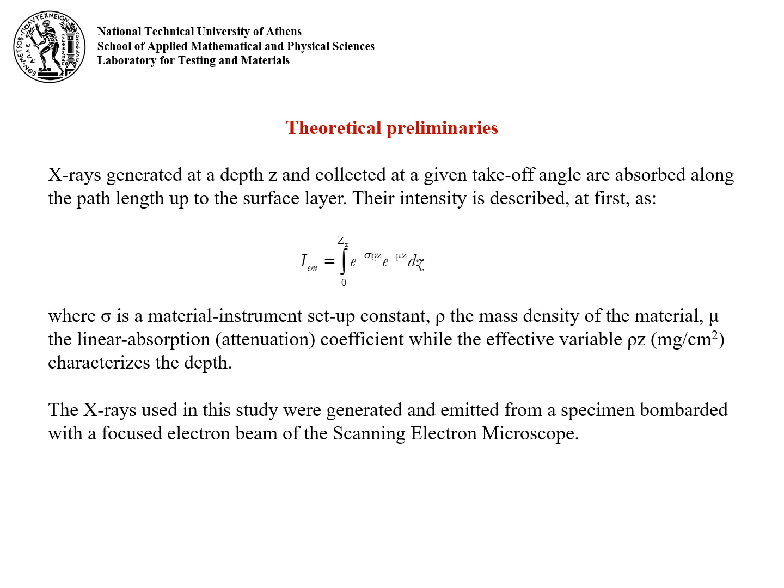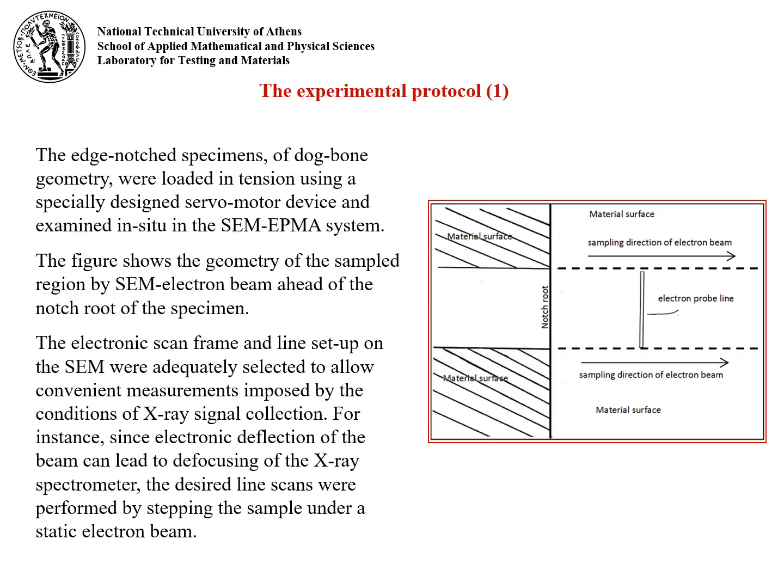In this study, the X-rays are generated and emitted from a specimen bombarded with a focused electron beam of the scanning electron microscope. The dog bone specimens with an edge notch were loaded in tension in the SEM ECMA system. The figure shows the geometry of the sampled region by the electron beam ahead of the notch root of the specimen.